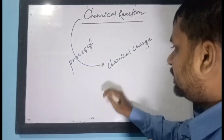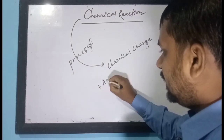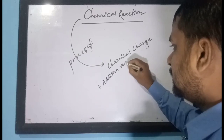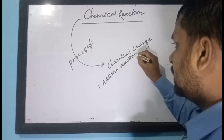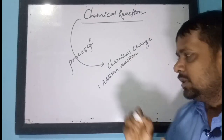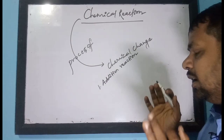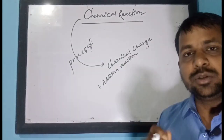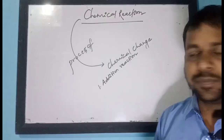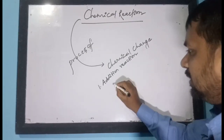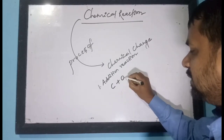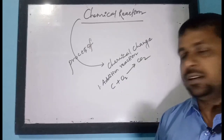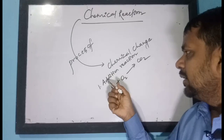The first type is addition reaction. In an addition reaction, the addition of simpler atoms or molecules takes place to form a larger molecule. For example, C + O₂ forms CO₂ — this is called an addition reaction.